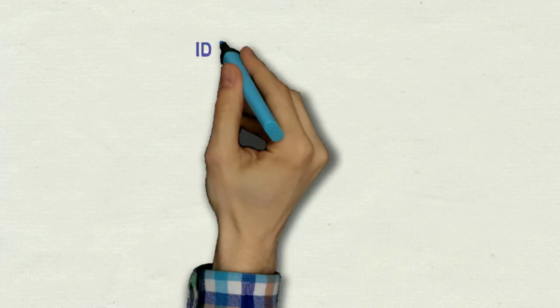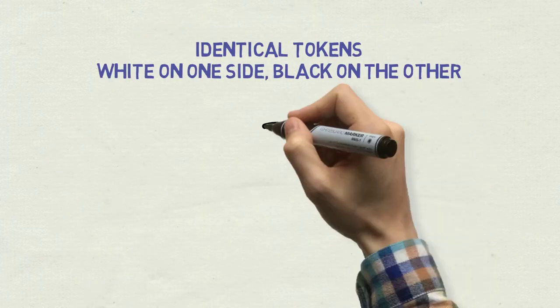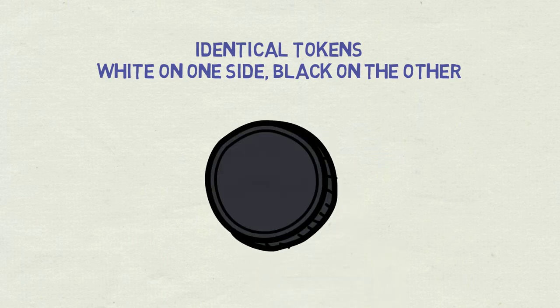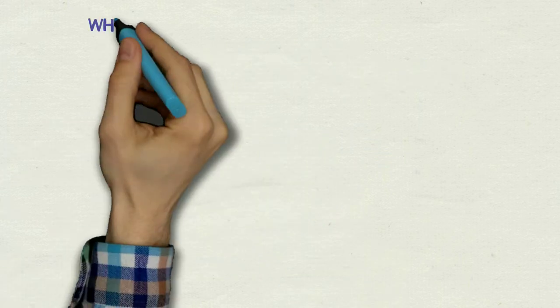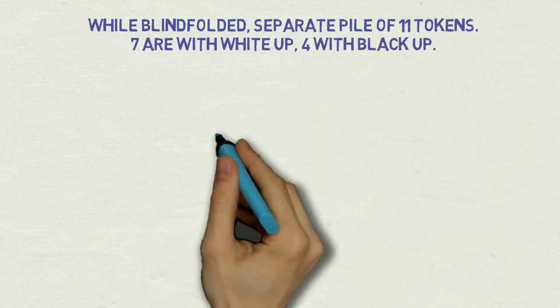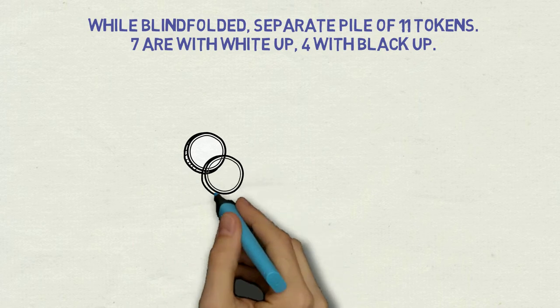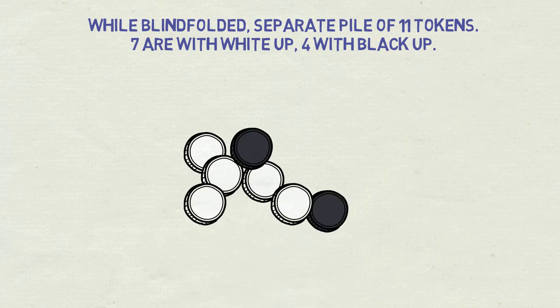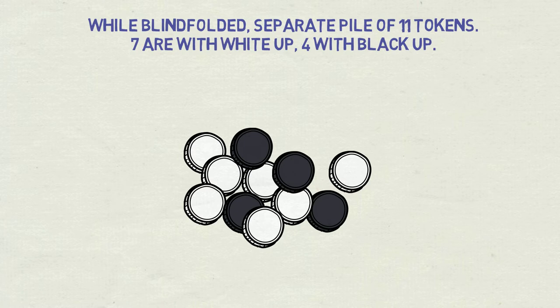So here it is. You have a bunch of tokens. Each of them is white on one side and black on the other. Now you sit at a table blindfolded and 11 such tokens are placed in front of you. You, of course, don't know which ones.